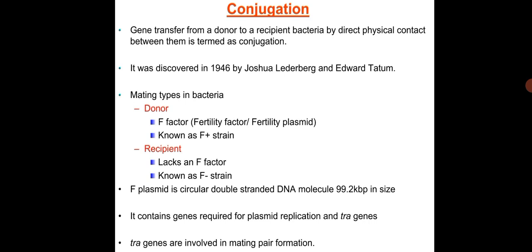Conjugation is the gene transfer from a donor to a recipient bacterium by direct physical contact between them. It was discovered in 1946 by Joseph Lederberg and Edward Tatum. The process has been studied extensively in E. coli, where two strains participate: F+ (male) and F− (female).